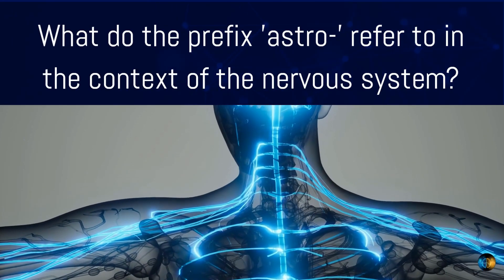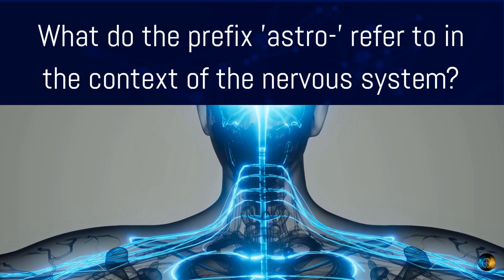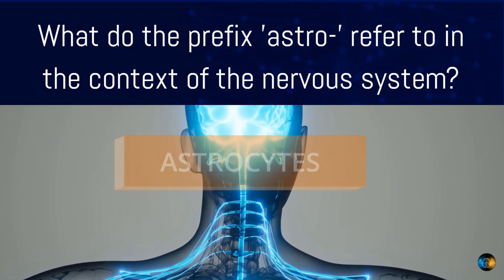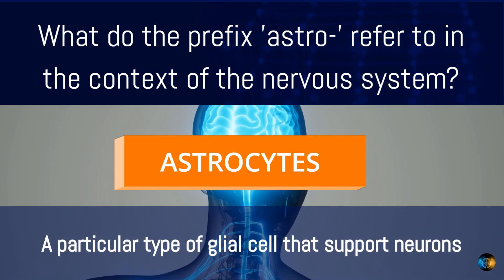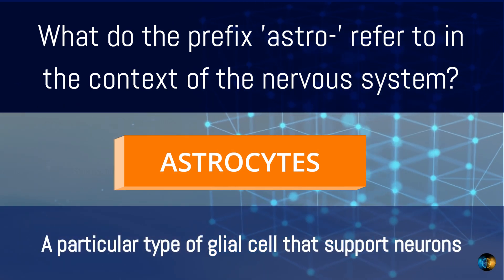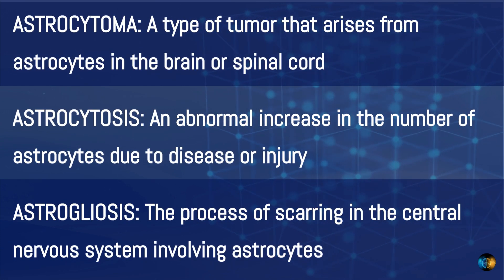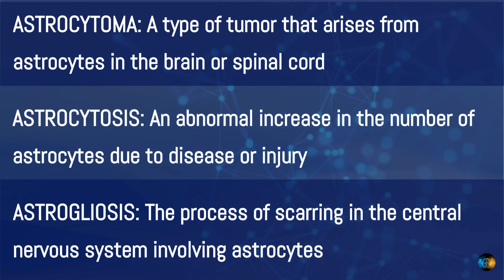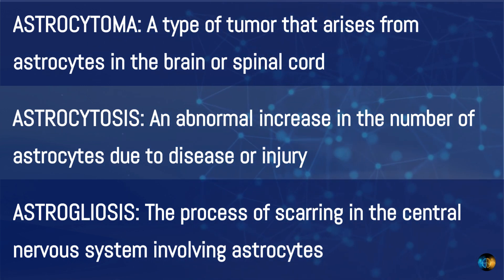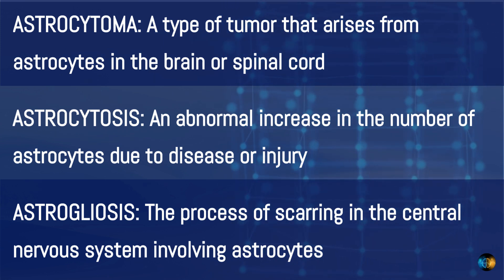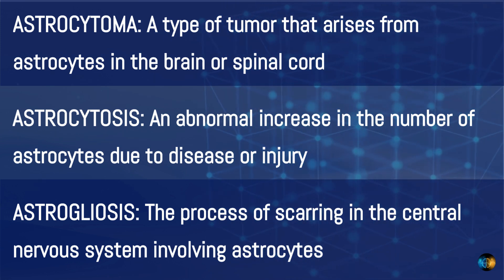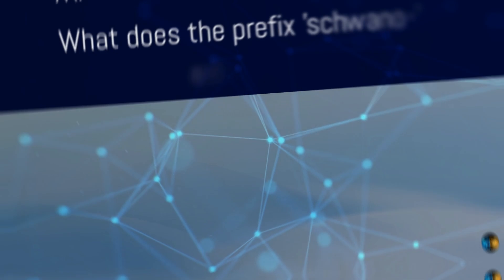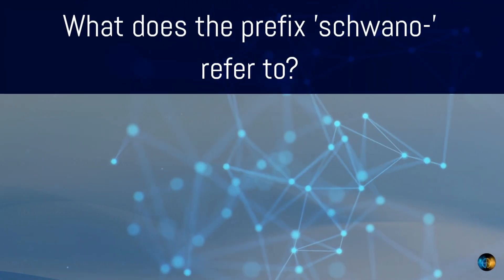What does the prefix 'astro' refer to in the context of the nervous system? Astrocytes — a particular type of glial cell that supports neurons. For example, astrocytoma is a type of tumor that arises from astrocytes in the brain or spinal cord; astrocytosis is an abnormal increase in the number of astrocytes due to disease or injury; and astrogliosis is the process of scarring in the central nervous system involving astrocytes.